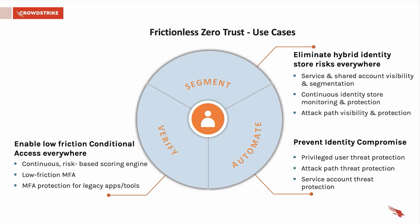This includes human accounts, service accounts, privileged accounts, and different types of endpoints — what privileges they have, what groups they belong to, and if they have one, what is their attack path to a privileged account.